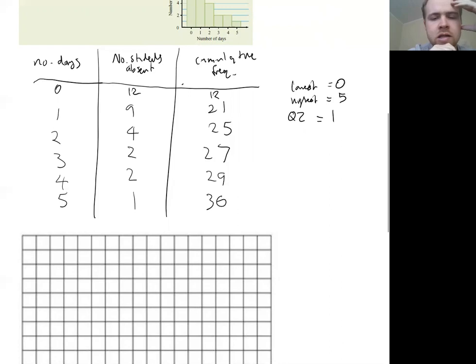And Q1 then is going to be the middle from the lowest 15 scores. So the middle score there is going to be the eighth score. And the eighth score is in the zero because it's less than 12. So Q1 is going to be zero. And then Q3 is going to be the upper 15. So if we think about that going from 16 to 30, the middle number is going to be the 23rd score there. And the 23rd score lies less than 25, so it's going to be two.